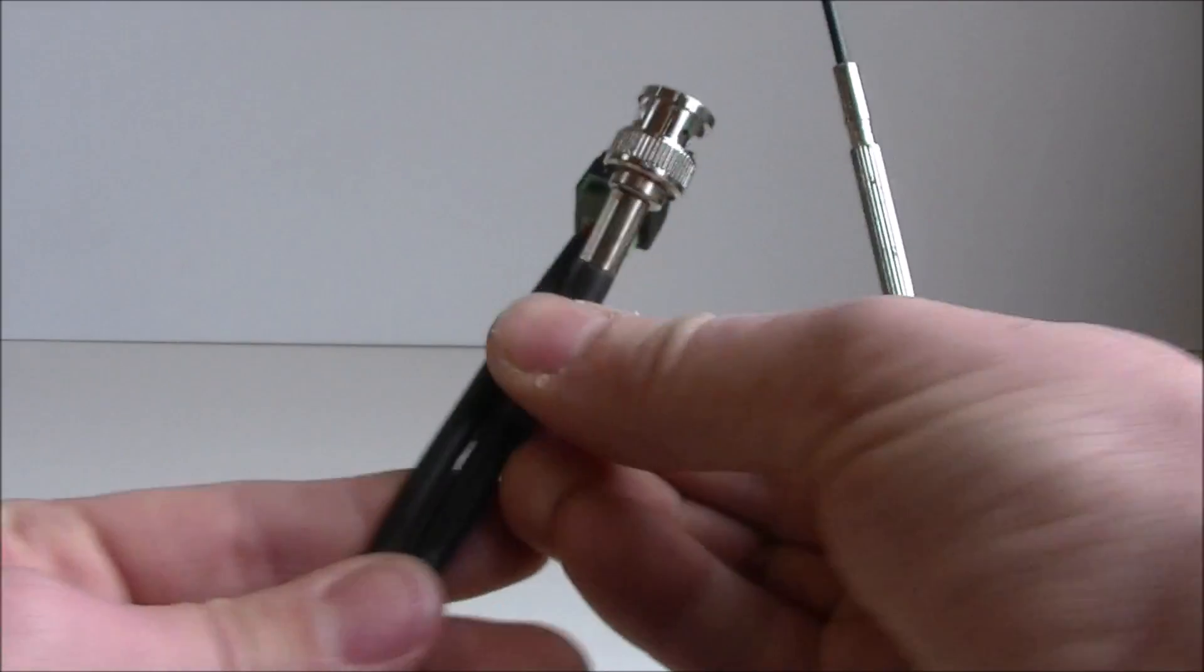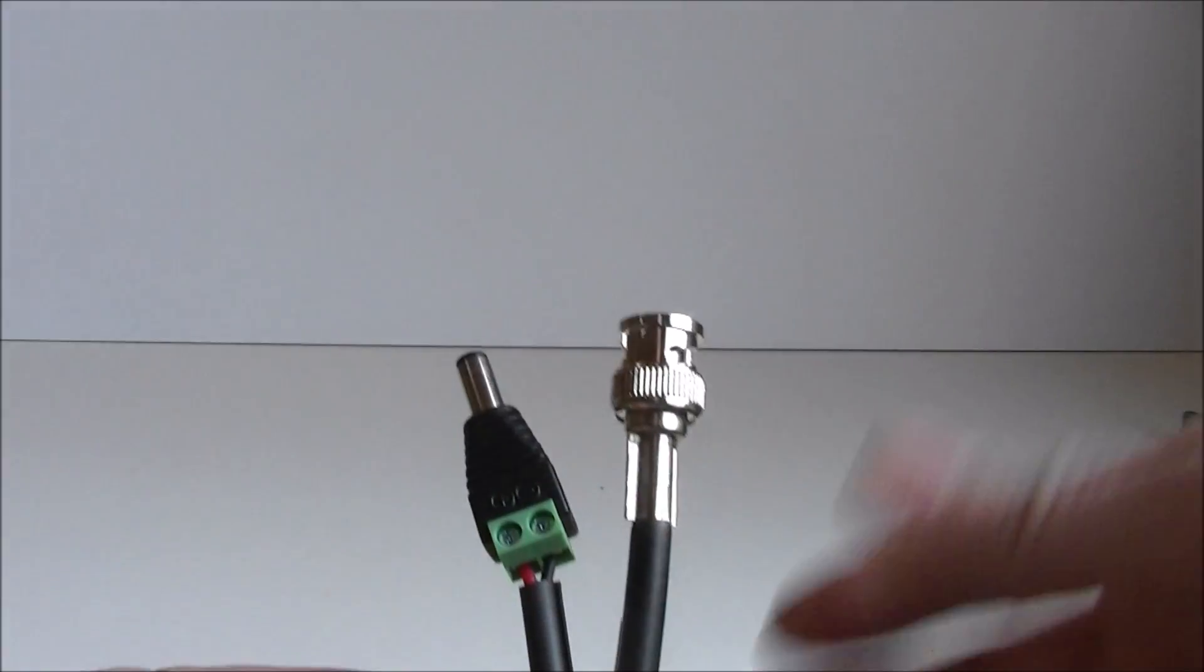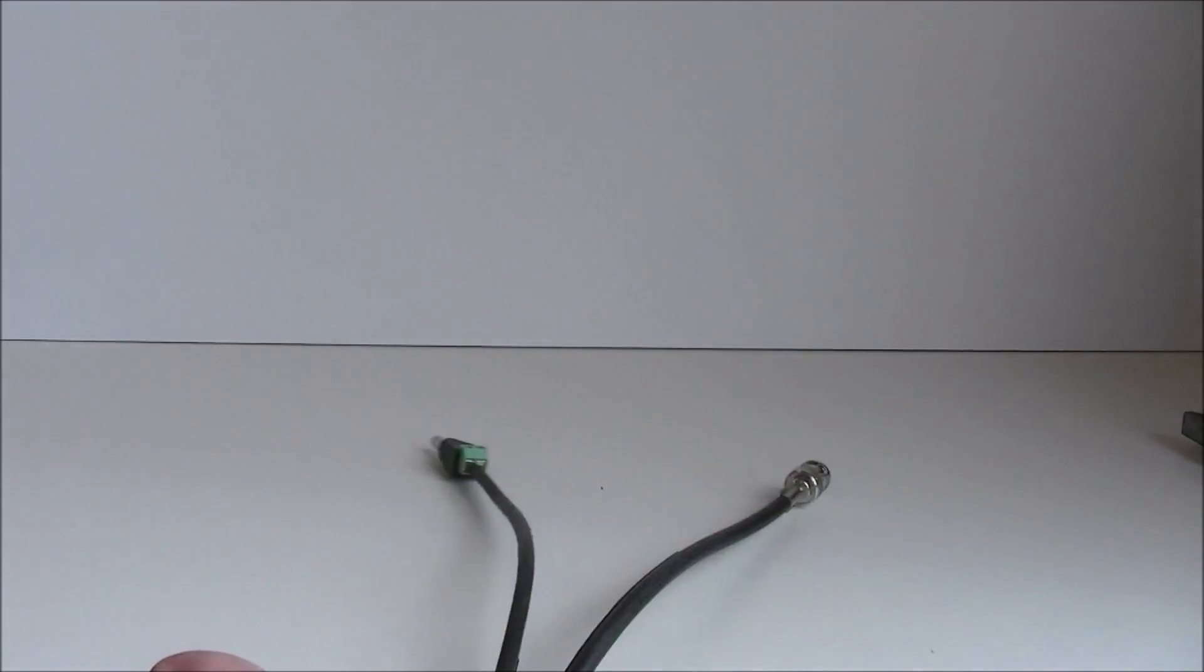So now we've got a cable that looks like this. That's pretty much how to crimp a BNC connector. That's all you need to do.